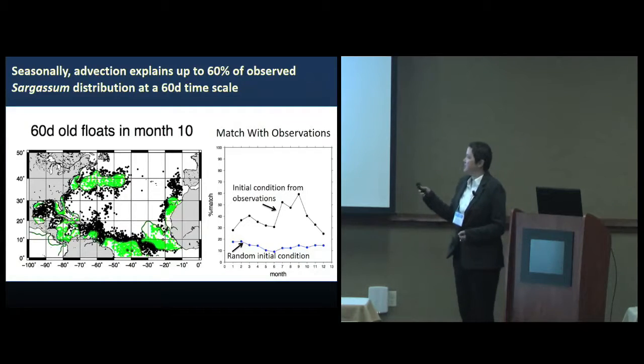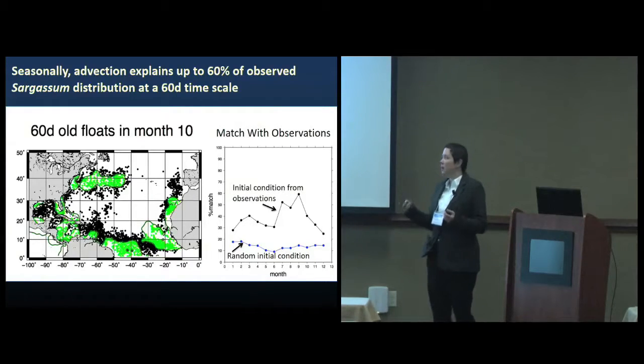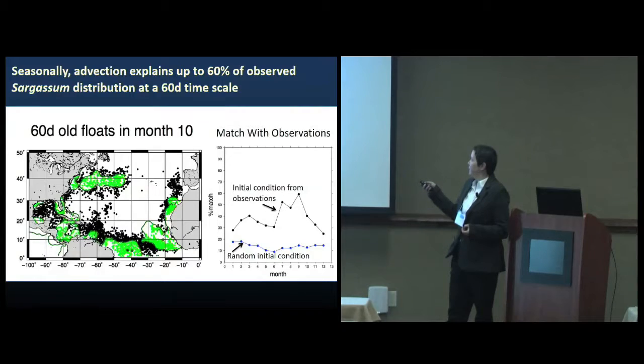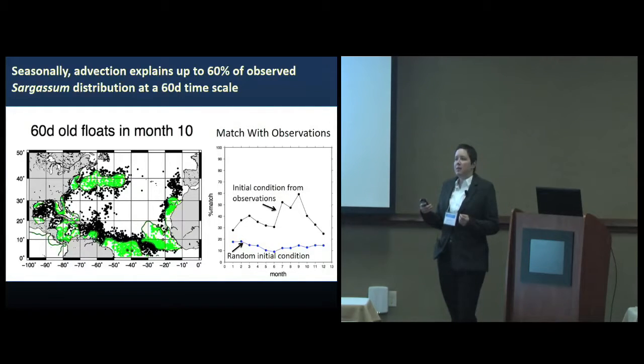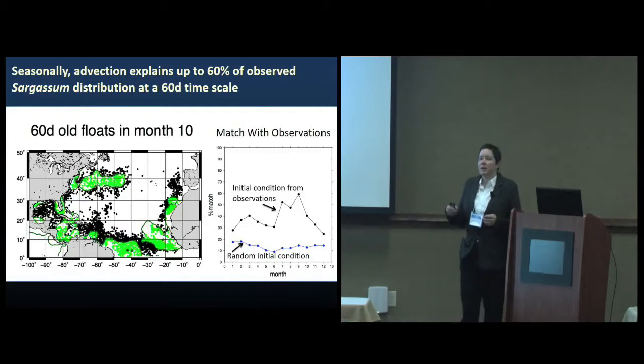So next, I looked at just smaller timescales. This is initializing particles based on observations and just tracking them for two months. I just want to get a handle on how important the physics are. It turns out that it's actually pretty variable across the year. This black line on the right here is the percent match between the observations and my particles. I can get between a 30 and a 60 percent match, and it varies seasonally. Physics seems to be more important at times of year when we would expect the biology to be less important, so at times when there's a stratified water column, when nutrients might be less available, when temperatures might not be optimal.